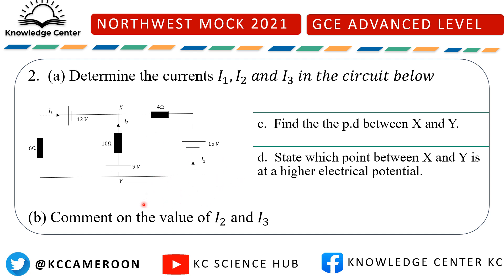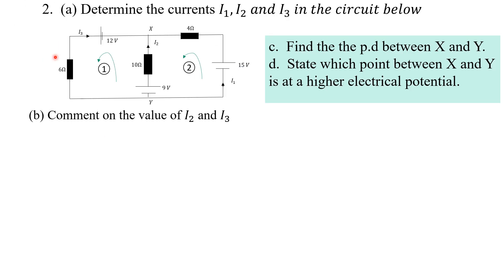Notice here that the examiner has given you the directions of current already. This is I3 here, I2 here, this is I1, all of them are entering this node X. Be careful there. Determine the currents I1, I2, and I3 in the circuit below.